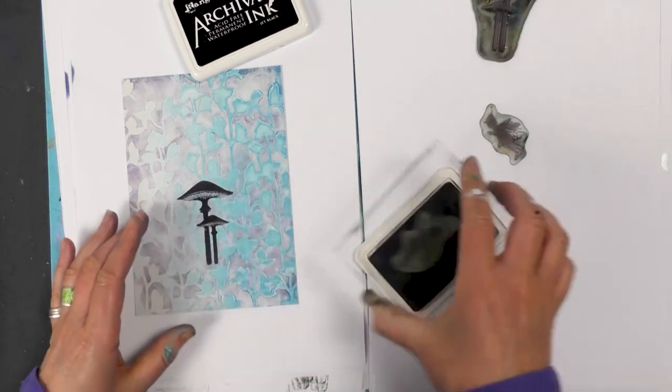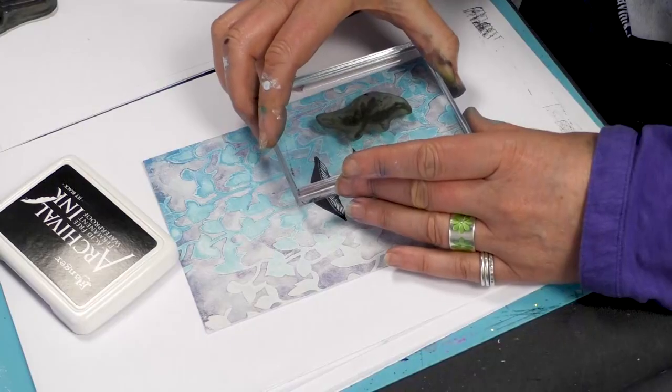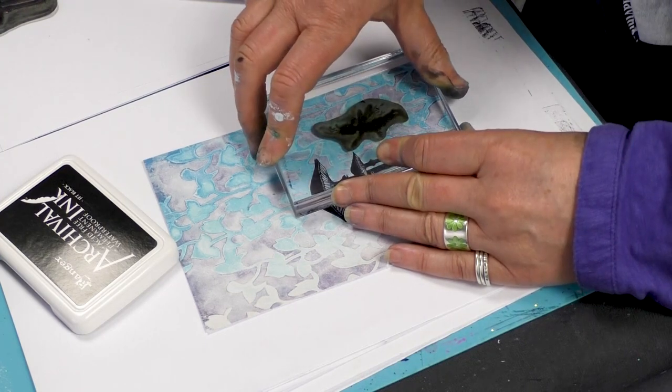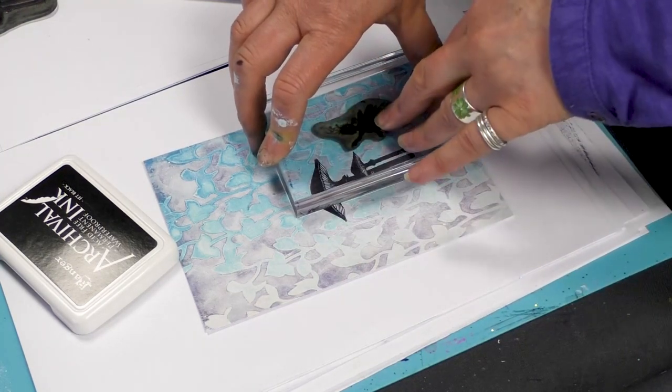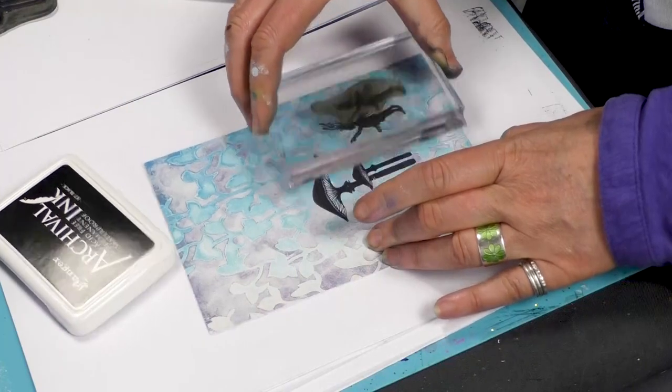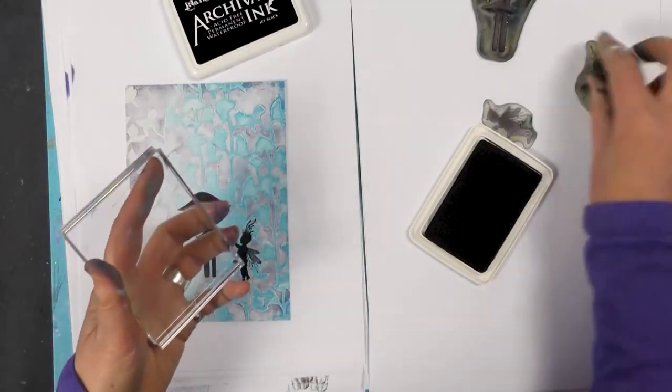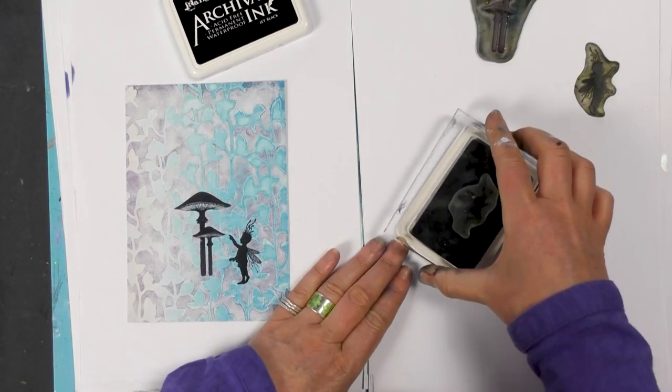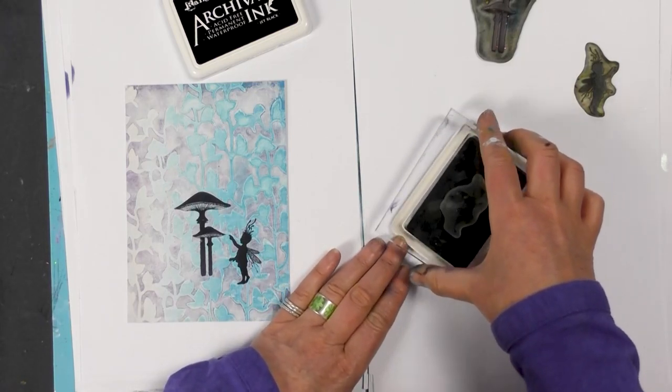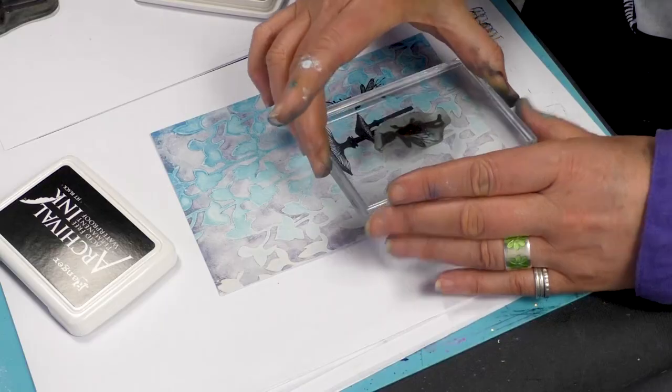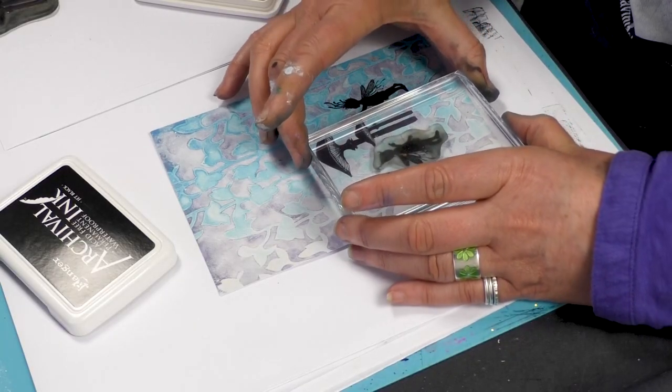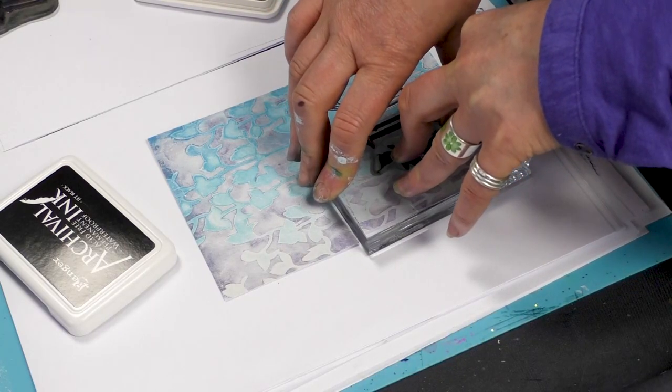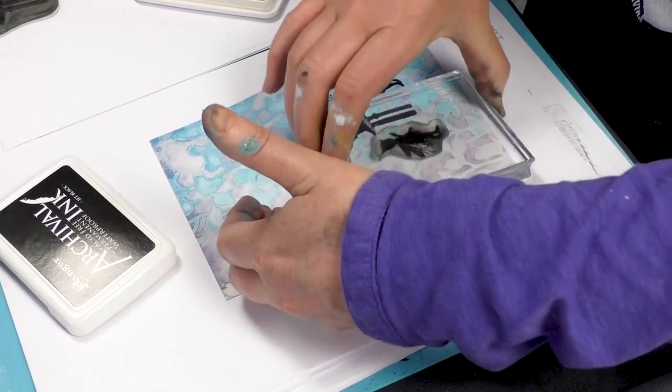And then we're going to stamp our little fairies either side of the mushroom. This is little Darcy and Rory, so I'm just going to pop that down. Good press. And the same with Darcy. Another good press.